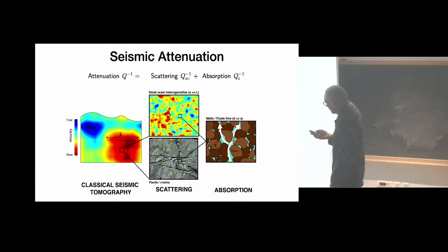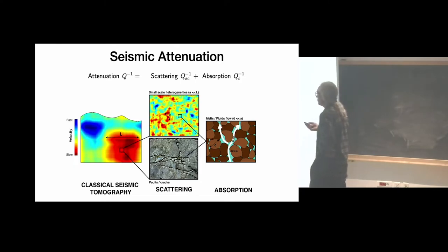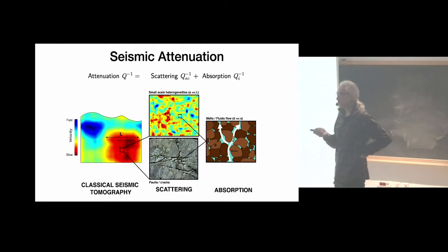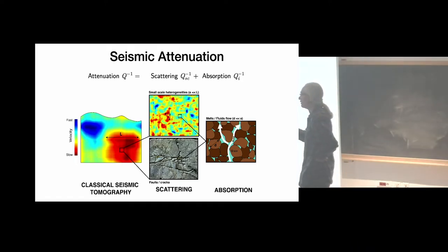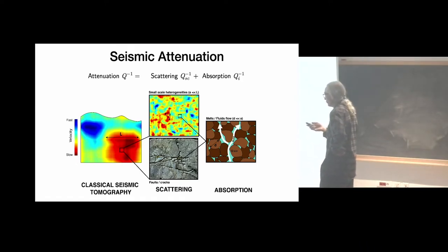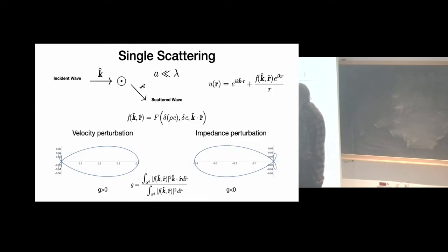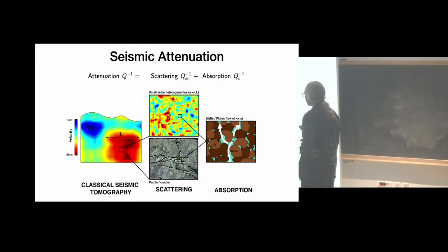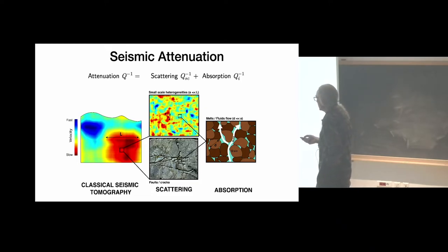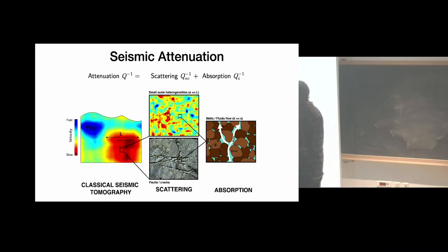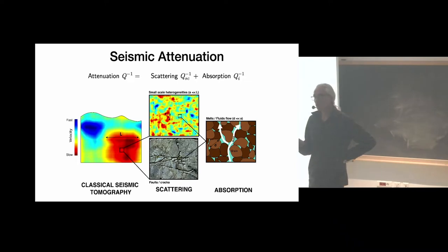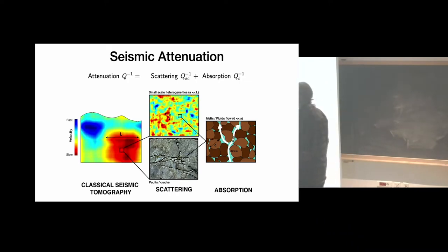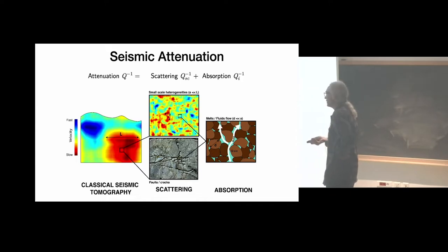Attenuation occurs at scales you generally do not see in seismic tomography. Classical travel-time or waveform tomography produces smooth images, but these do not represent the full complexity. If you zoom in, for example into a low-velocity anomaly, you will see small-scale variations that are not detected by classical data analysis.